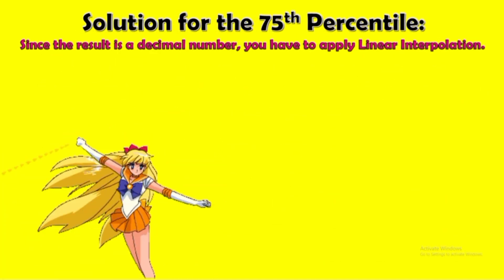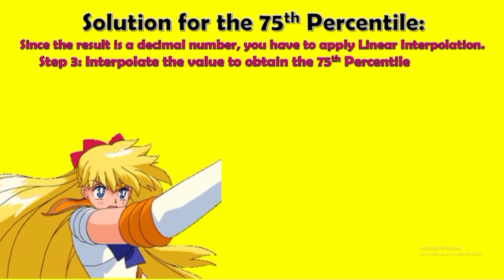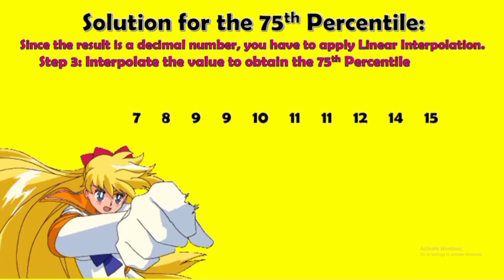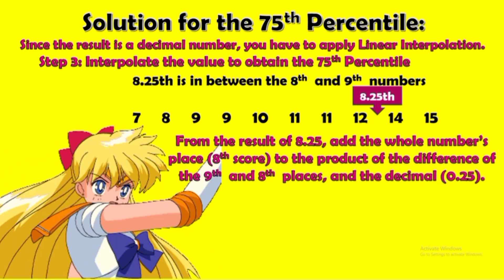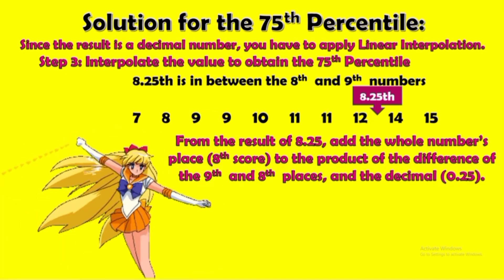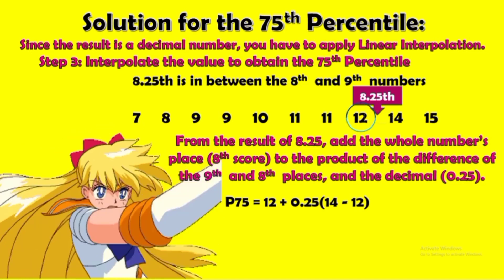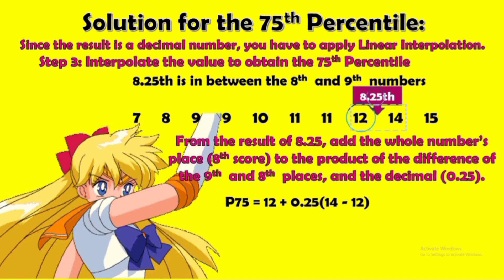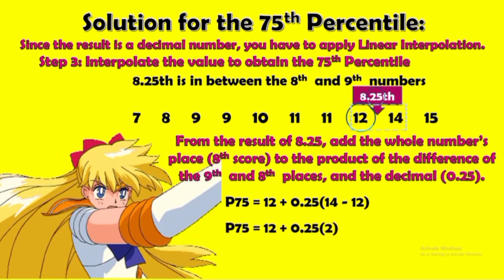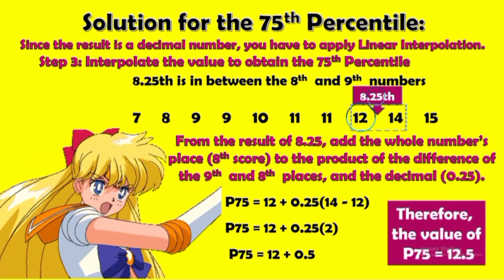Since the result is a decimal number, you have to apply linear interpolation. Step 3: interpolate the value to obtain the 75th percentile. Again, we will use the same position. Here is the 8.25th place. That is in between the eighth and the ninth numbers: 12 and 14. From the result of 8.25, add the whole number's place, or the eighth score, to the product of the difference of the ninth and the eighth place and the decimal number, which is 0.25. Now let's solve. 14 minus 12 is 2. Then let's multiply. Then add. Therefore, the value of the 75th percentile is 12.5.